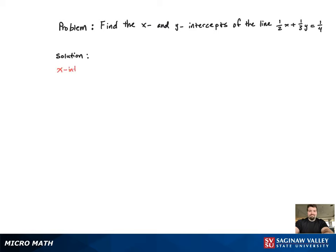We're going to start with the x-intercept. To do that, we're going to plug 0 in for y. That'll leave us with 1 half x equal to 1 fourth. Multiply both sides by 2, and you get 1 half for x. That corresponds to the point 1 half comma 0.